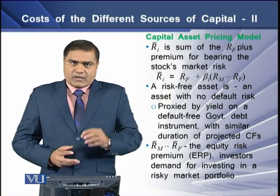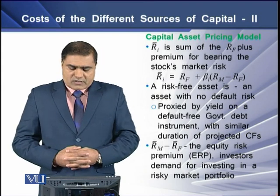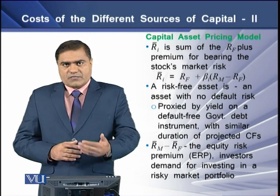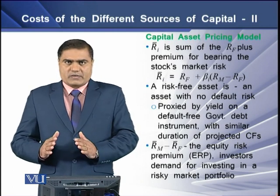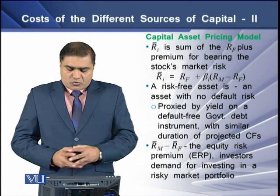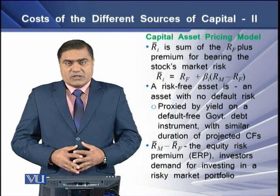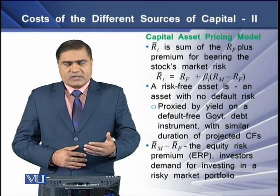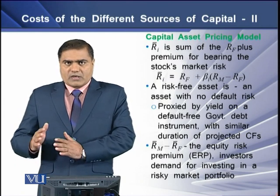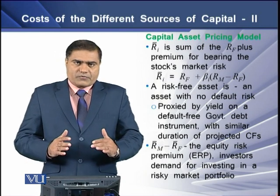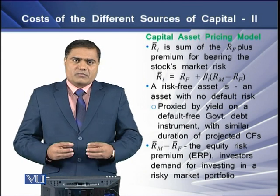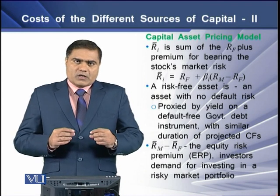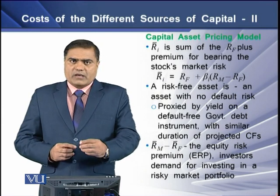By risk-free rate in this CAPM model we mean a rate that is earned on a risk-free asset, and by risk-free asset we mean an asset that has no default risk. To proxy the risk-free rate, we generally use the yield on default-free government debt instruments that have a similar duration to the project cash flows. For example, if we are working in Pakistan, we can use the T-bills rate as a proxy for the risk-free rate.